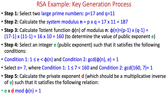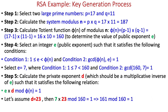In step five, the final step, we calculate the private exponent d of the private key, which is the multiplicative inverse of e and satisfies the relation e × d mod phi(n) = 1. Let's assume d = 23. We verify: 7 × 23 mod 160 = 1. This relation is satisfied, so d = 23 is correct.